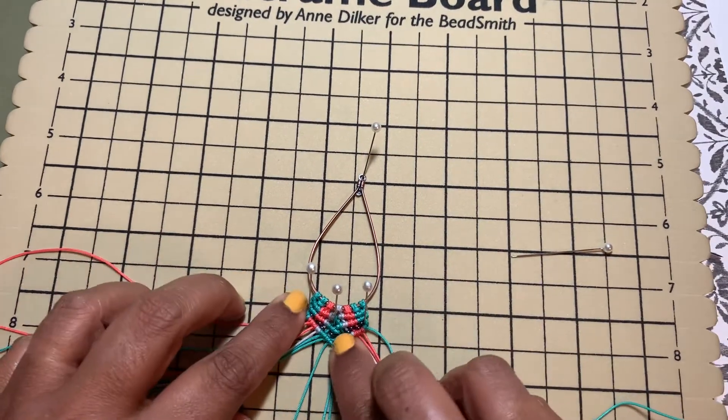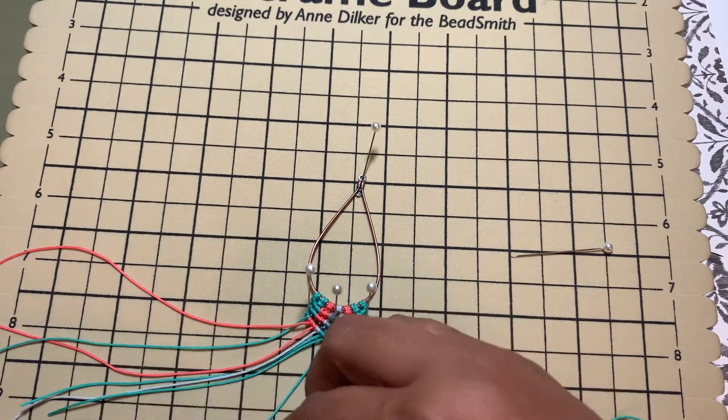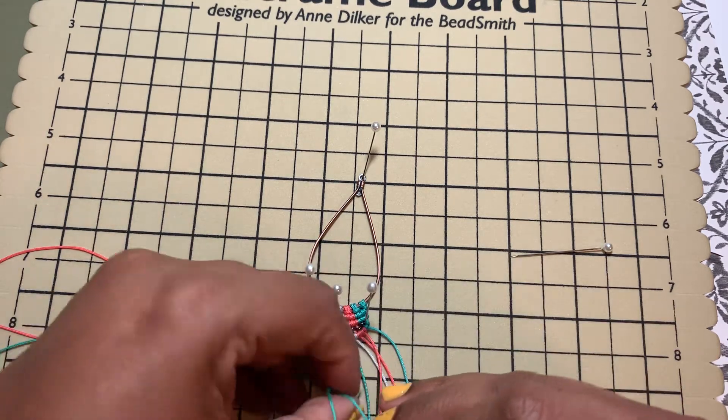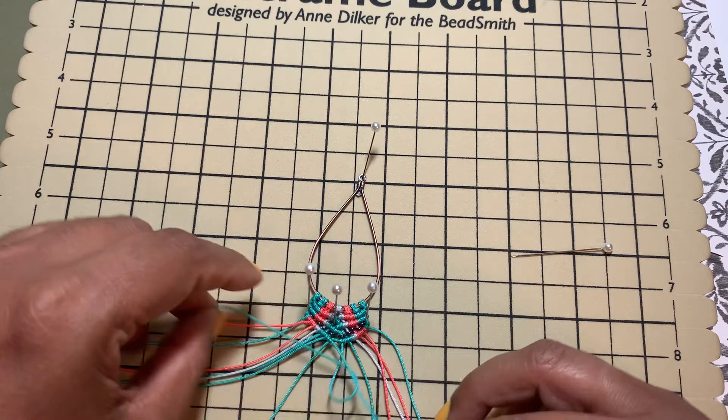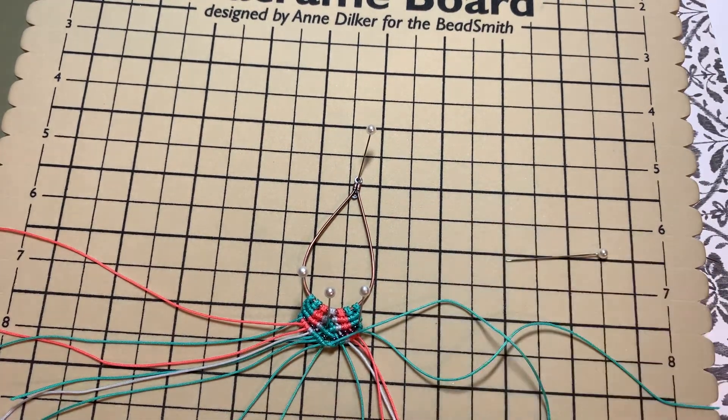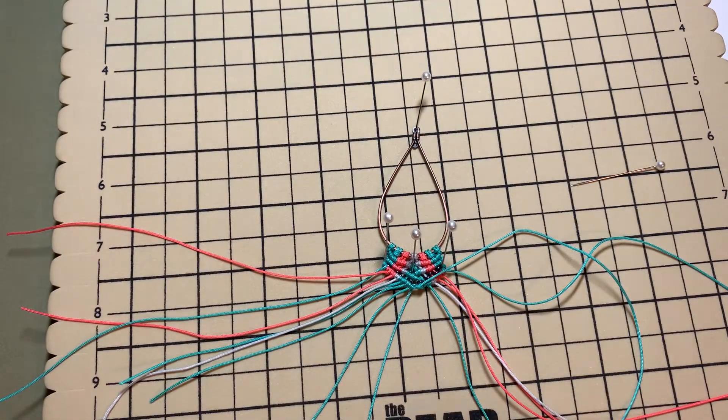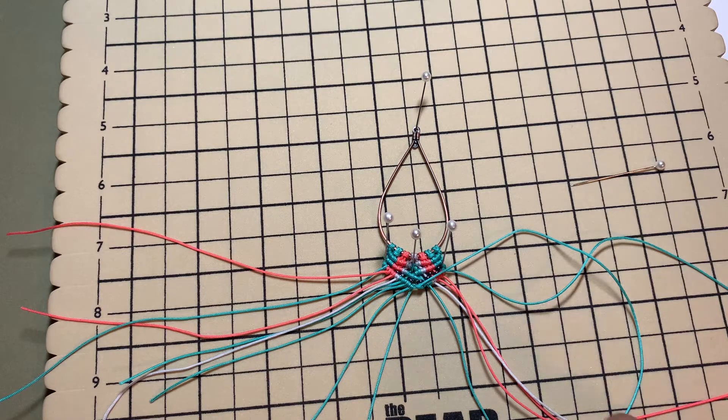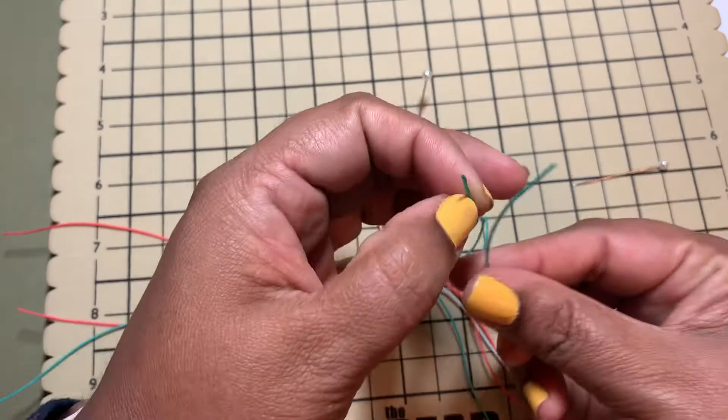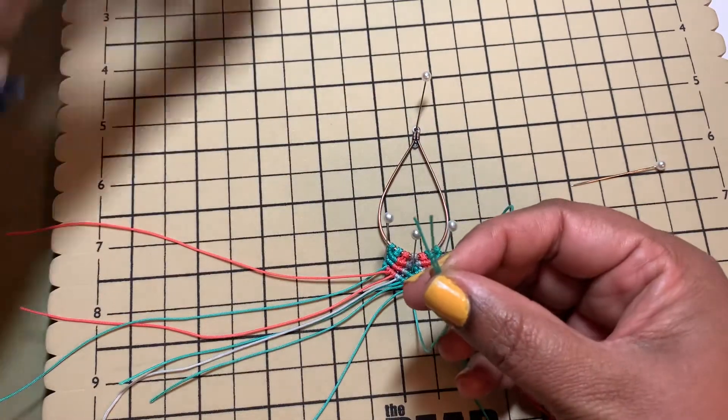There you go. You can also do one more of this so that these things are uniform. Now we have this, all we need to do is attach this bead. I would suggest you take the cords and melt the ends with your tea light candle.